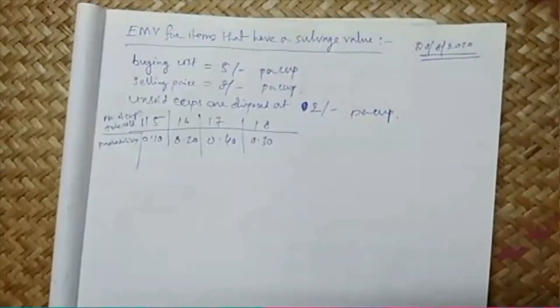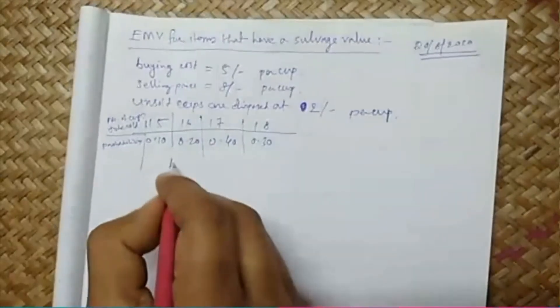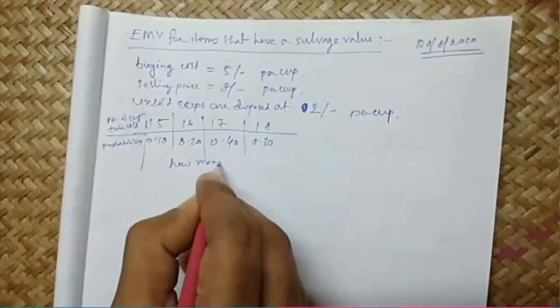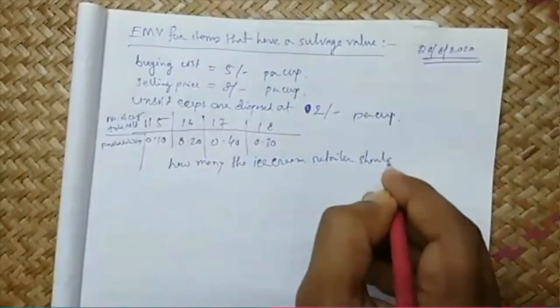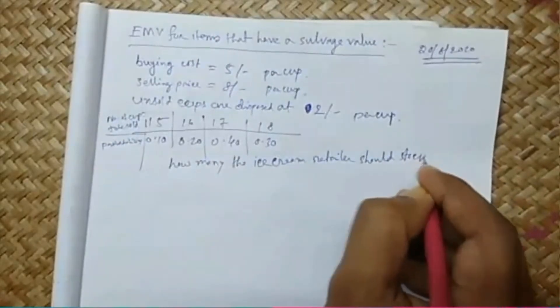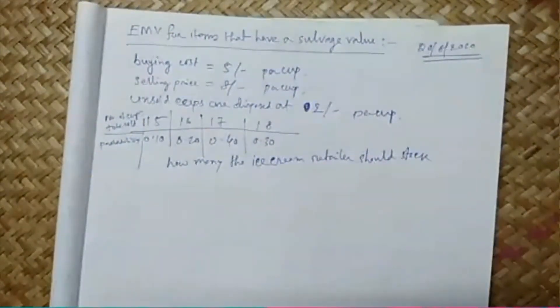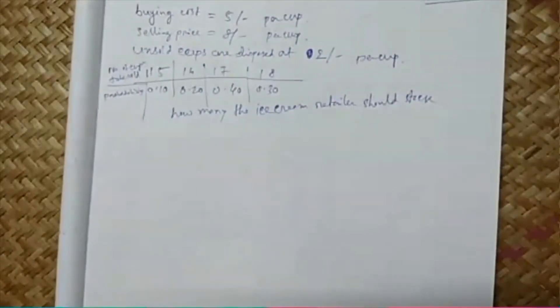Probability of getting sold number of cups: 15 probability is 0.10, 16 is 0.20, 17 is 0.40, 18 is 0.30. Now we have to find out the EMV or choose the correct decision alternative - how many cups the ice cream retailer should buy.